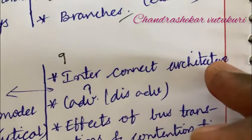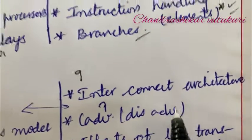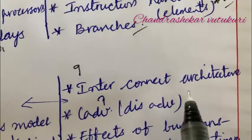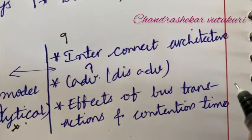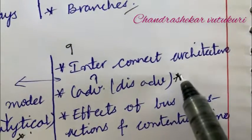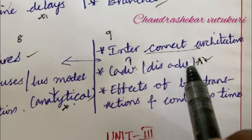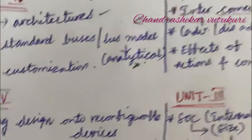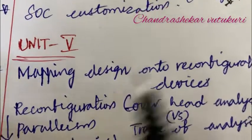Related to the 9th question, it is all about the interconnect architecture and their advantages and disadvantages with respect to the bus. The interconnect architecture and the effects of bus transactions and contention time is one of the very important questions related to the bus and interconnect architecture. It may be a sure question this time.